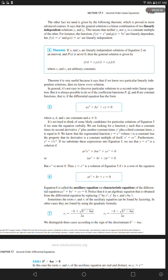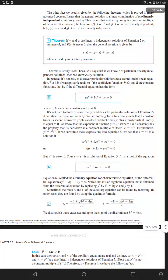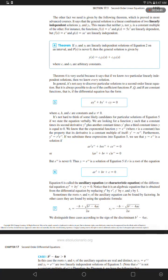Equation 6 is called the auxiliary equation or characteristic equation of the differential equation A times y double prime plus B times y prime plus C times y equals 0. Notice that it is an algebraic equation that is obtained from the differential equation by replacing y double prime by r squared and y prime by r and y by 1.